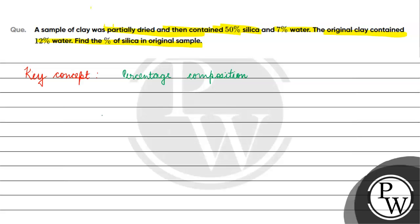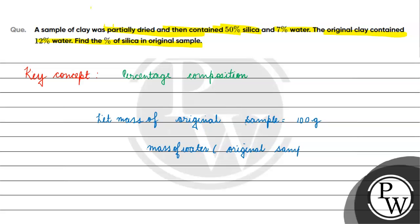Let's say the mass of the original sample is 100 grams. So, the mass of water in the original sample is 12% of 100 grams, which equals 12 grams.